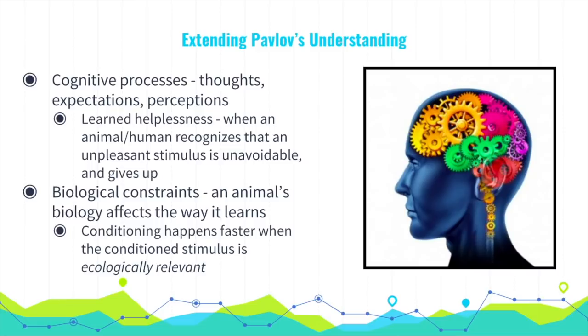Now let's move on to biological constraints. The laws of learning differ across animals — they're constrained by biology. For example, if a mouse is sickened after drinking flavored water, it will avoid that flavor, because mice link sickness to their sense of taste. On the other hand, if a bird consumes tainted-looking food and sickens hours later, the bird will know what that food looks like and avoid it, because birds link sickness to their sense of sight.